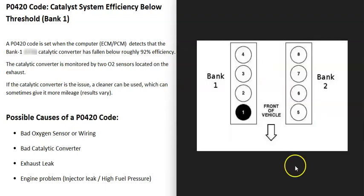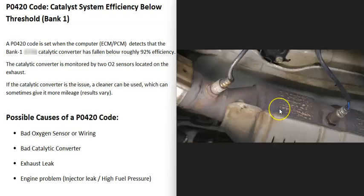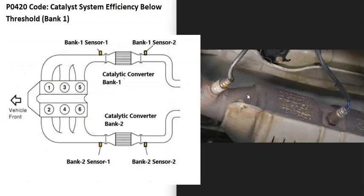To troubleshoot this, if you have a V6 or V8 engine, you need to identify the banks. Bank one is always the side of the engine with the number one cylinder — you can Google your engine's cylinder location or firing order to find it. The opposite side is bank two. If you have a four-cylinder engine, there's only bank one. Each bank has its own catalytic converter and two oxygen sensors.